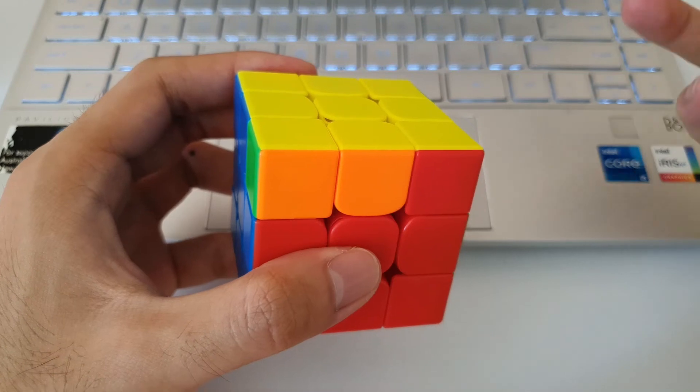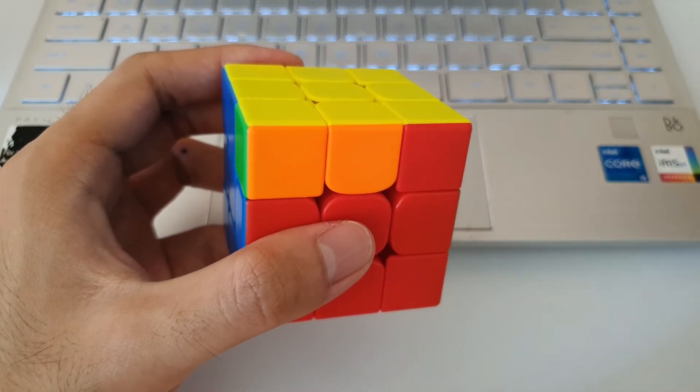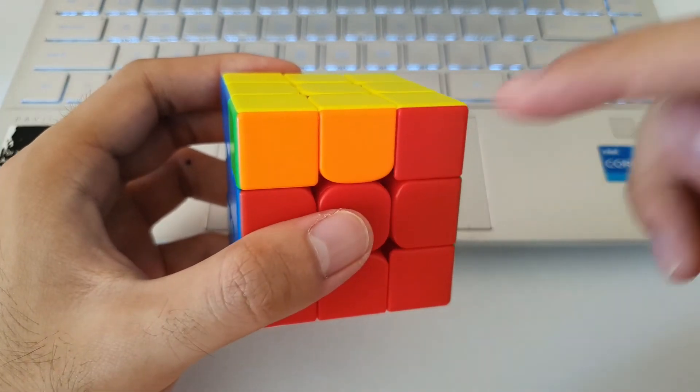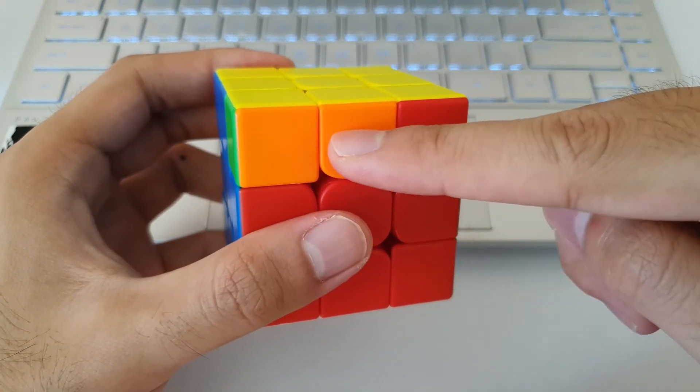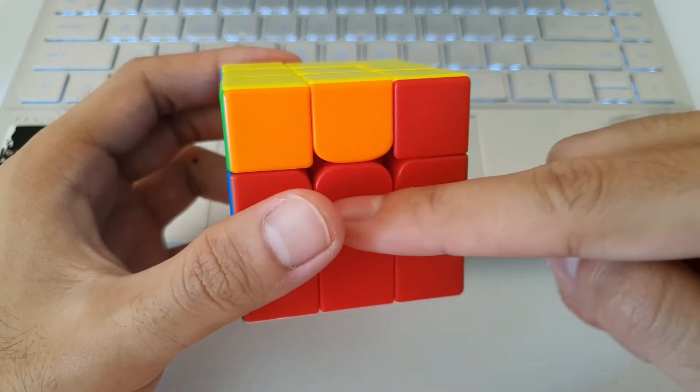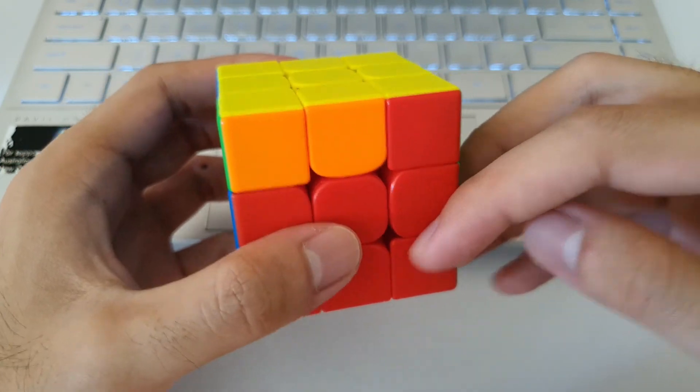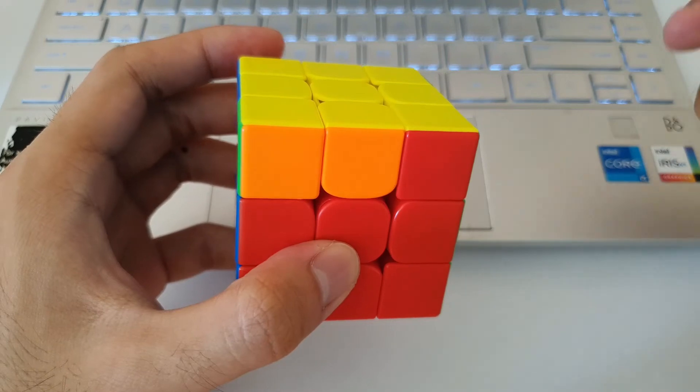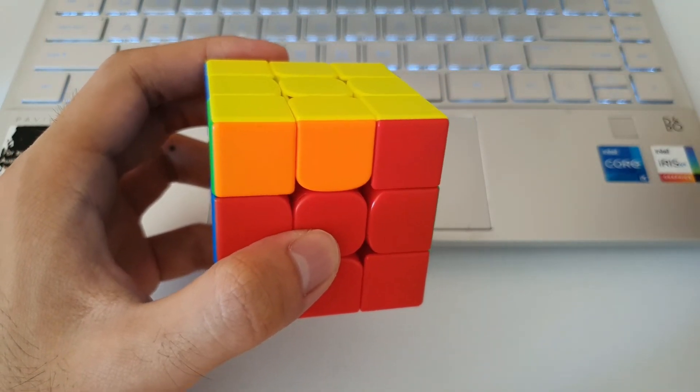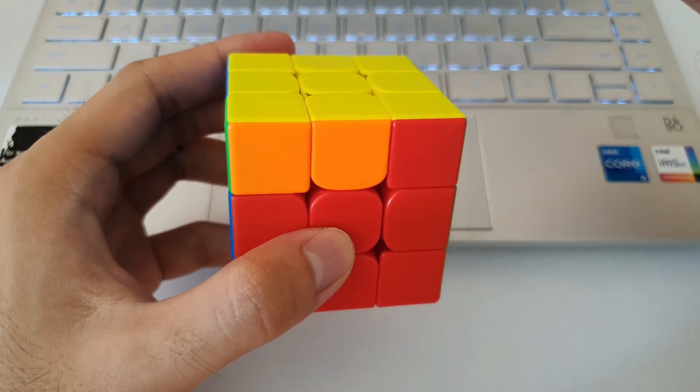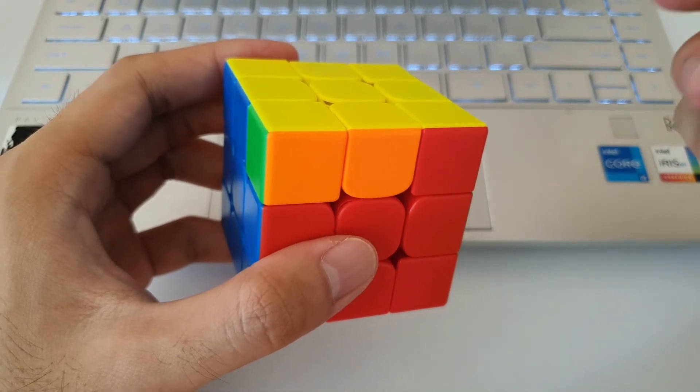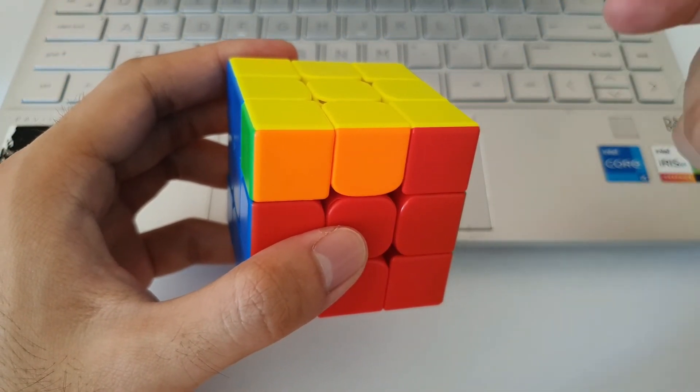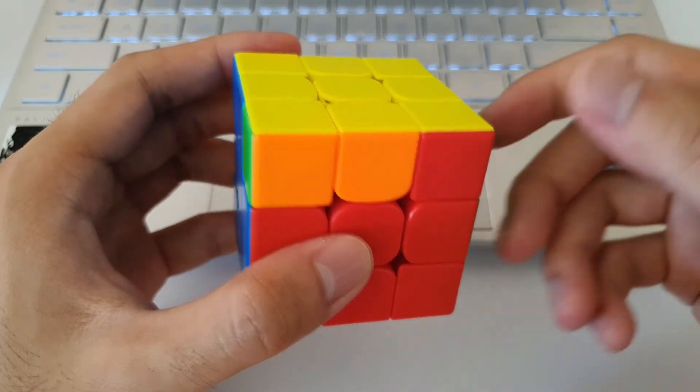So the same technique can be applied to both N-perms. So here we have the Nb perm and you'll notice that the orange color 2x1 bar here is actually not matching the rest of the side. In fact, orange belongs on the other side. So in this case I can recognize that after I do the Nb algorithm, I need to do a U2 at the end to solve the cube. So it's a good thing to recognize that before PLL so you don't have to pause to recognize AUF again after you do the algorithm.